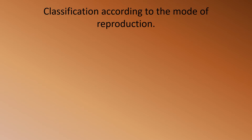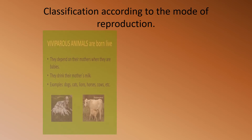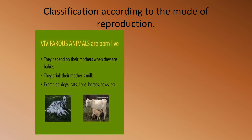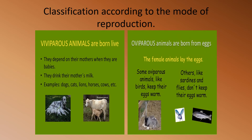Classification according to the mode of reproduction: viviparous animals are born live — they give birth to young ones like themselves. They depend on their mothers when they are babies and drink their mother's milk. Examples are dogs, cats, lions, horses, and cows. Oviparous animals are born from eggs — the female animals lay the eggs. Some oviparous animals like birds keep their eggs warm.